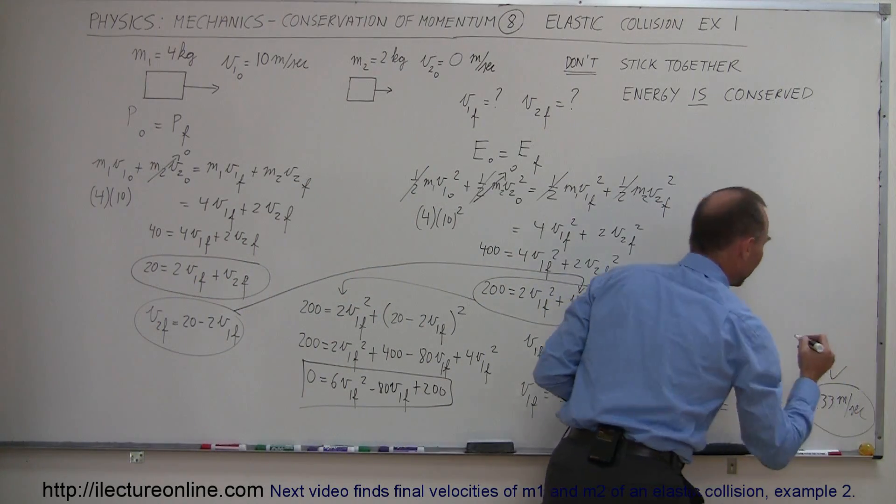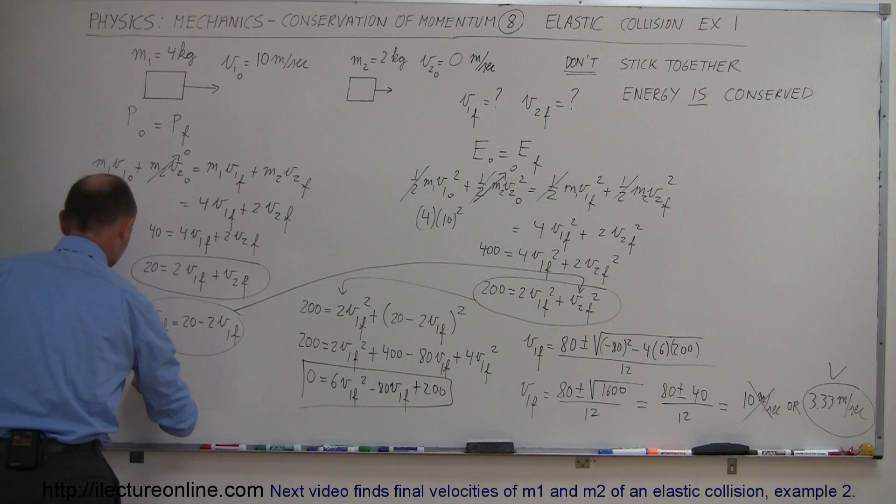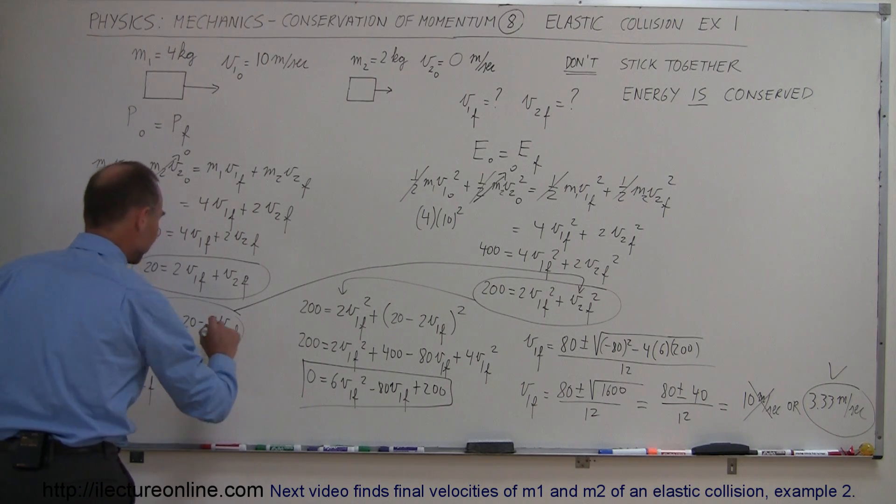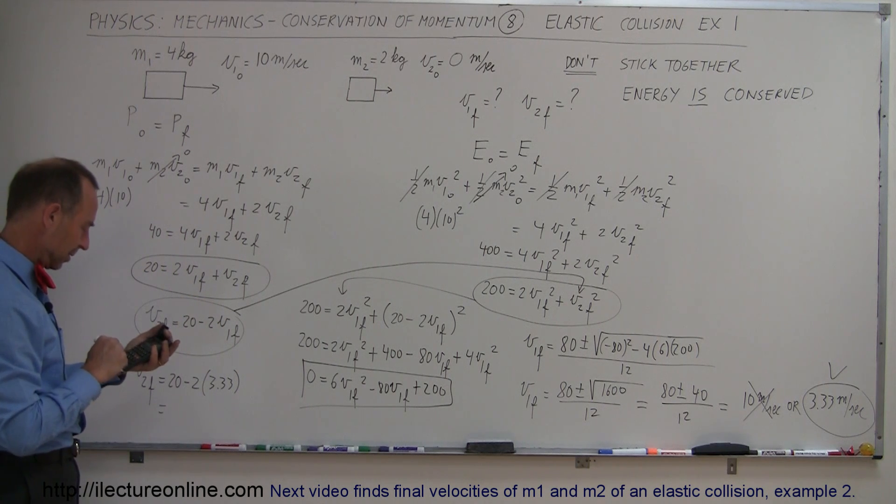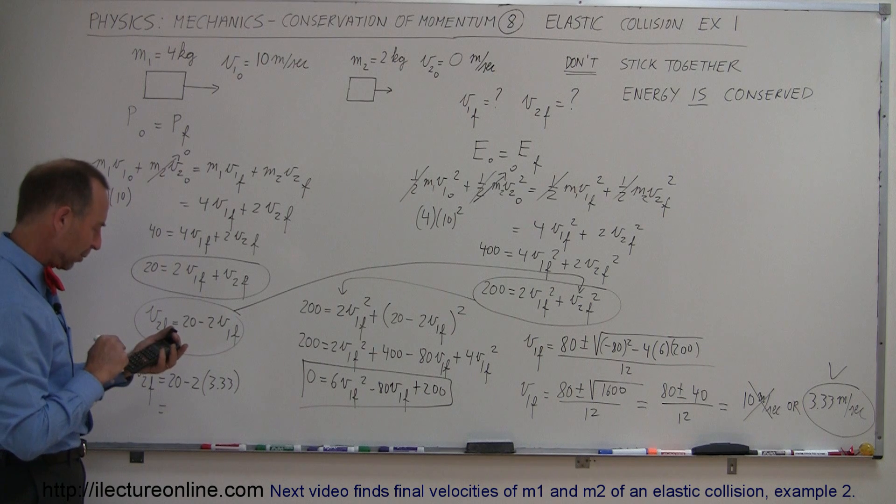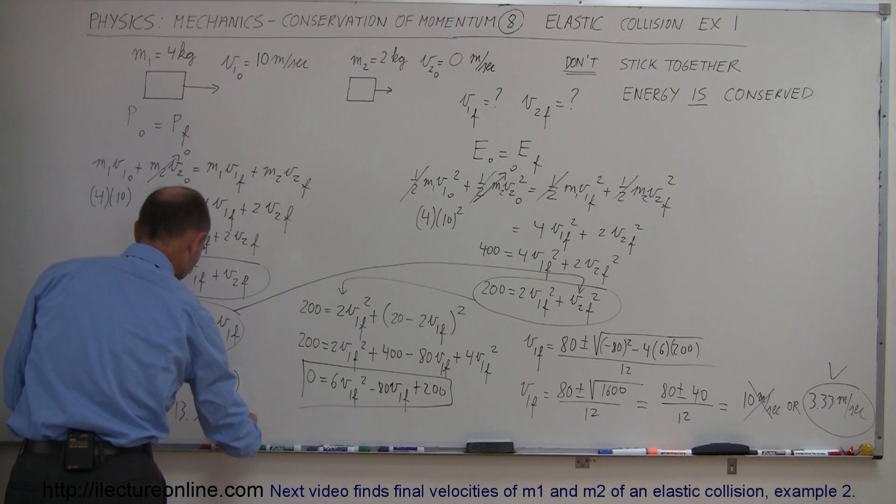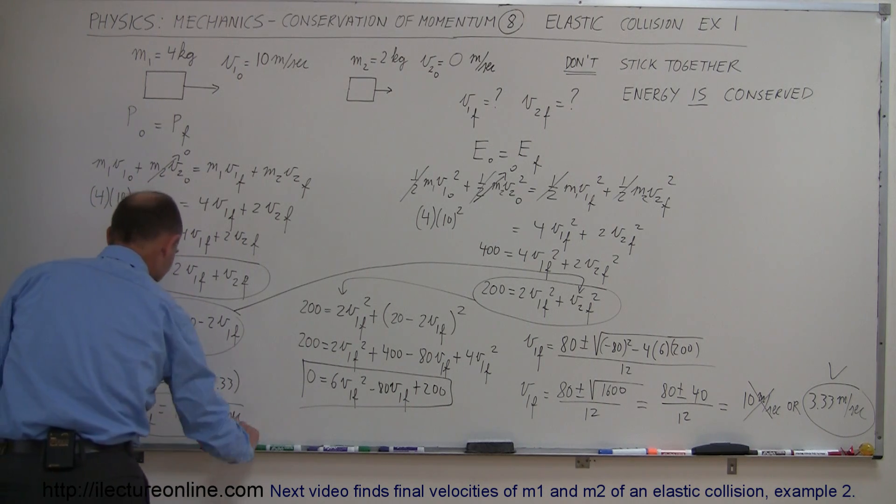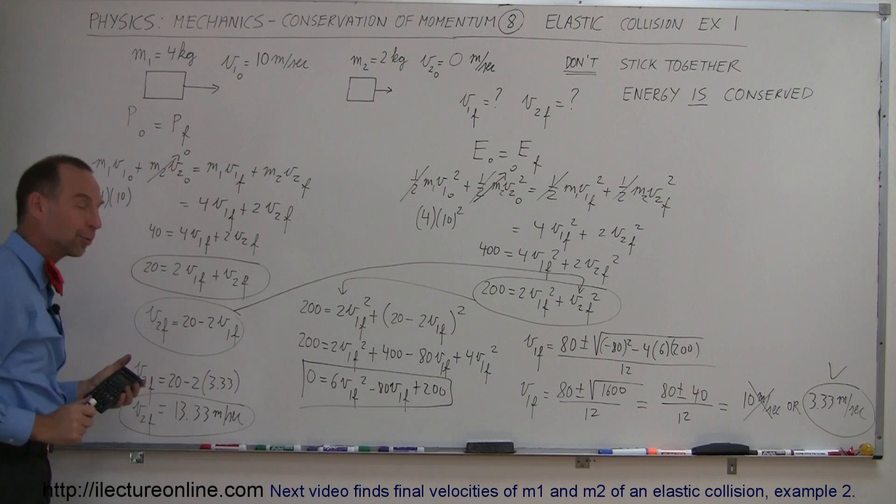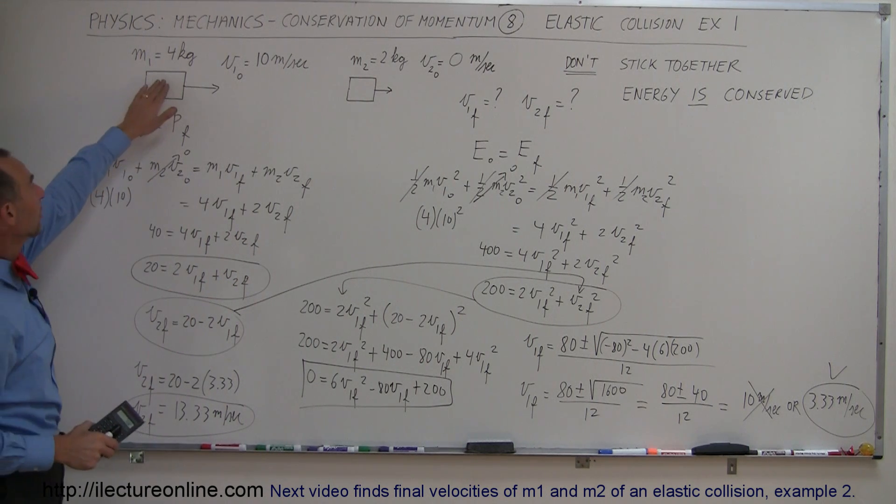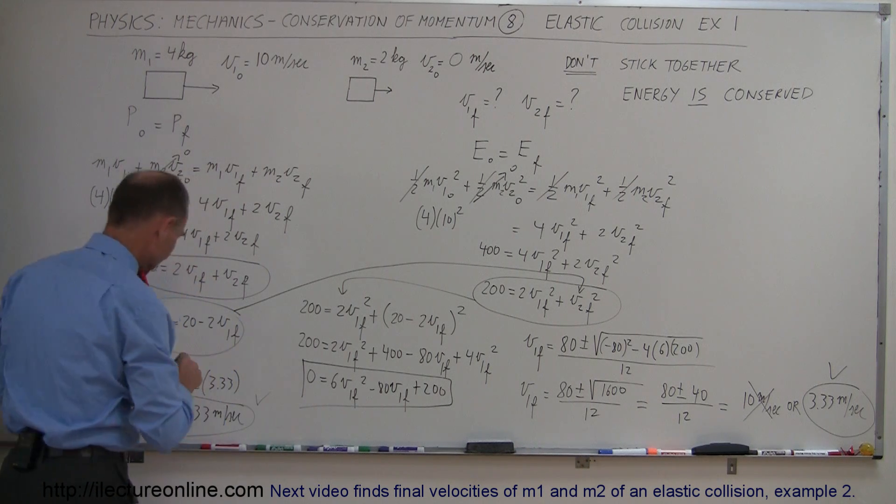So this is the plausible answer for V1 final. Now coming back over here, this allows me to solve for V2 final. So V2 final is equal to 20 minus 2 times V1 final, which is 3.33 meters per second. And so 2 times 3.33 equals, that would be equal to 13.33 meters per second. That would be V2 final. And that seems plausible because there you have a smaller mass being hit by a big block. It was stationary after the collision. It will be moving at 13.3 meters per second. And V1 final, which means the big mass here after collision, will be moving to the right at 3.3 meters per second. And so there are your two answers of this particular problem.